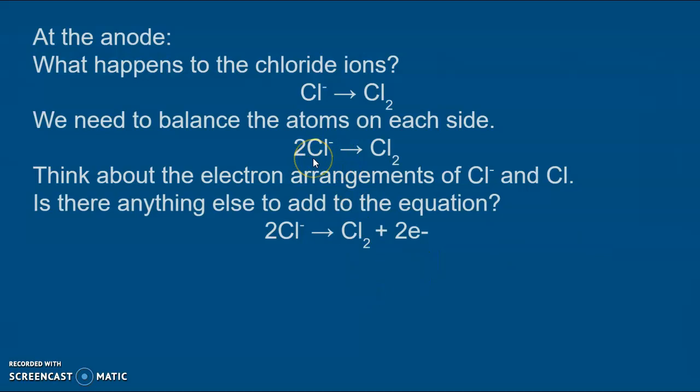And each chloride ion has to lose one electron to become a chlorine atom. Remember those chlorine atoms then pair up to form these molecules. So we need a total of two electrons on this side. That makes a 2- charge on this side and two times 1- equals 2- charge on that side of the equation as well.